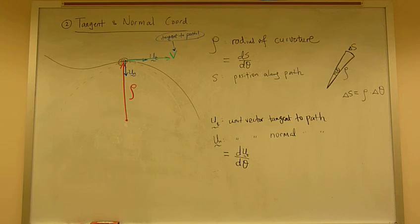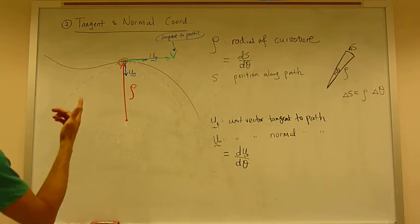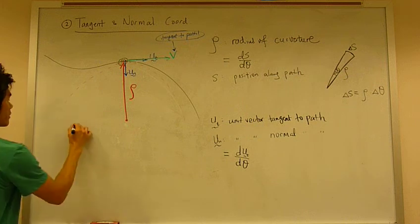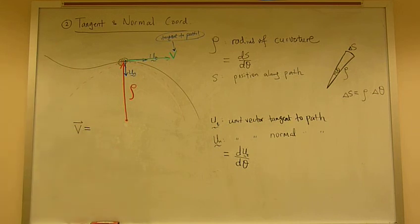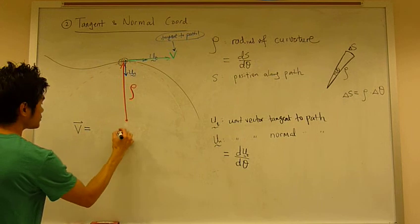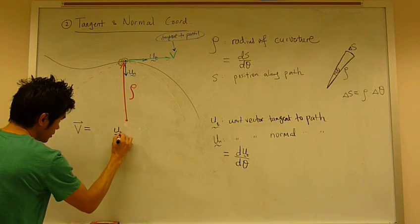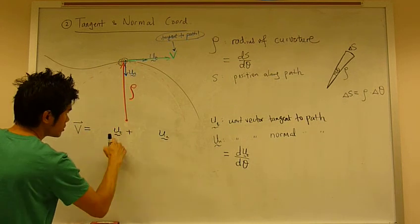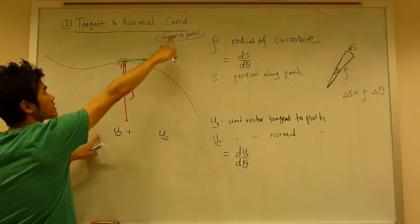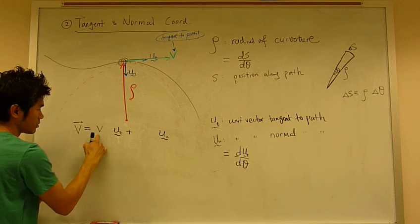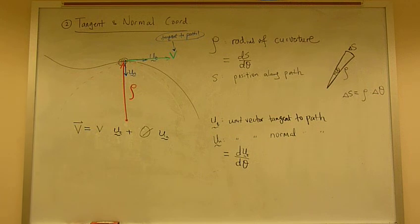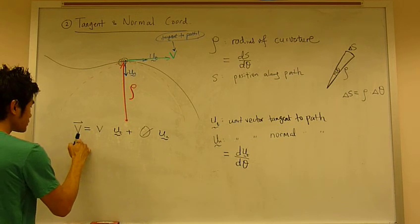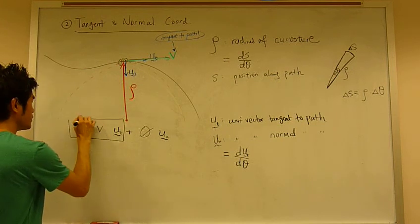So with these basic quantities defined, let's look at the velocity and acceleration. Now, velocity for this particle in the tangent normal coordinate system can be expressed as something in the tangent and normal direction. And velocity is always tangent to the path. So this is simply v ut. And velocity can never be normal to the path, so the component in the normal direction is zero. Therefore, velocity equals v ut.